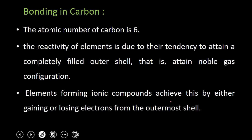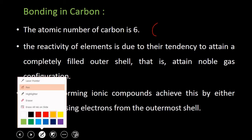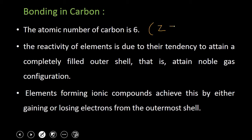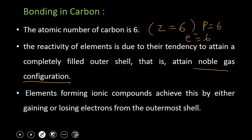Now we will see the bonding in carbon. The atomic number of carbon is 6, represented by Z = 6. This means it has 6 protons and, since the atom is neutral, 6 electrons. Its electronic configuration is 2, 4. Any element reacts in order to become stable like noble gases. To attain the electronic configuration of the nearest noble gas, an element may lose electrons, may gain electrons, or may share electrons.